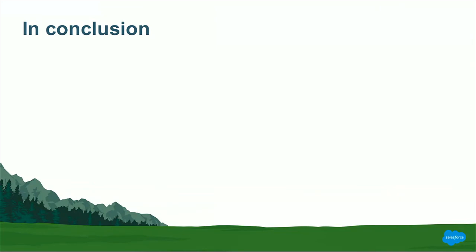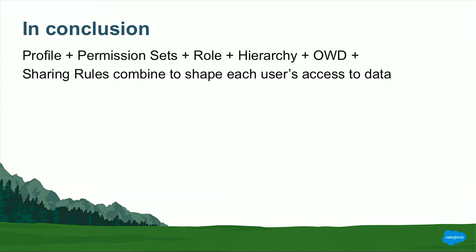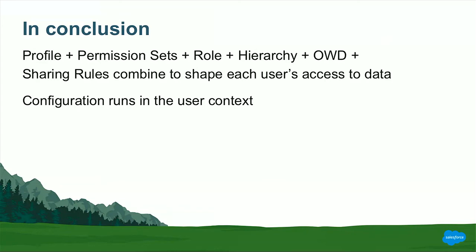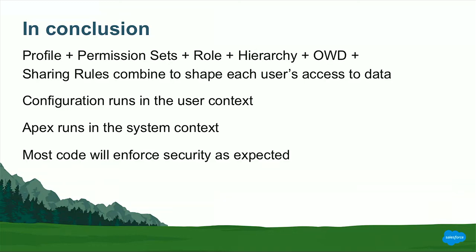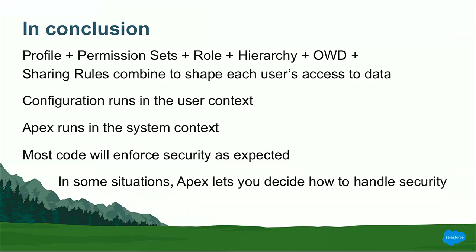In conclusion, there's a whole set of levers and dials that determine security — profiles, permission sets, roles and their hierarchy, org-wide defaults, and sharing rules — which all combine to shape each user's access to data. Your declarative configuration always runs in the user context. Your Apex always runs in the system context. For most of your code, security will just work as you expect. But in a few situations, Apex lets you decide how to handle security, so you need to know that's your responsibility and implement it accordingly.